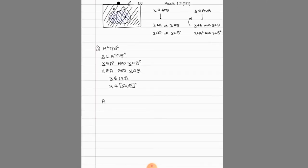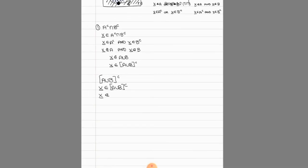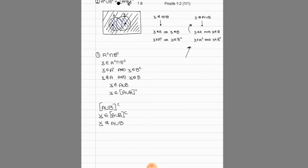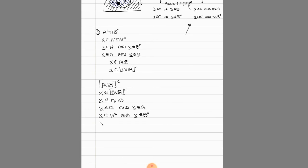Now we prove it in the opposite direction. We start off looking at A union B complement, and if X belongs to that, we can remove the complement and say that X does not belong to A union B. That's equivalent to saying that X does not belong to A and also X does not belong to B. If that's true, then we can say that X belongs to A complement and also X belongs to B complement. If it belongs to both A complement and B complement at the same time, then it has to belong to the intersection of the two. So we essentially went backwards. You are expected to show it both ways.